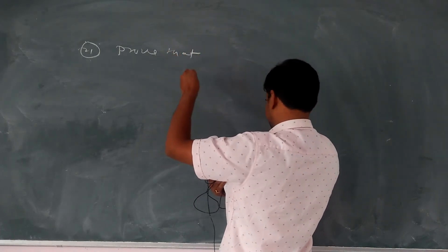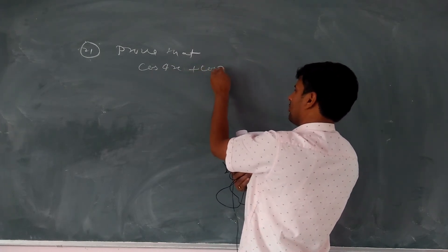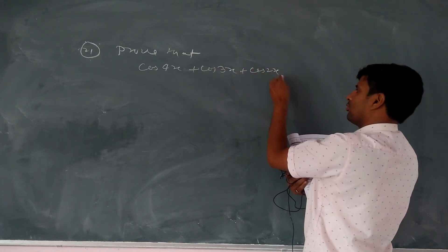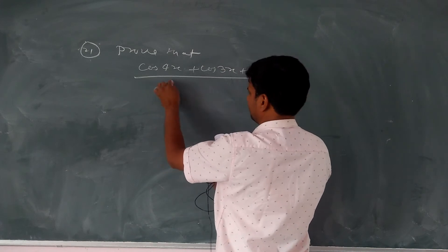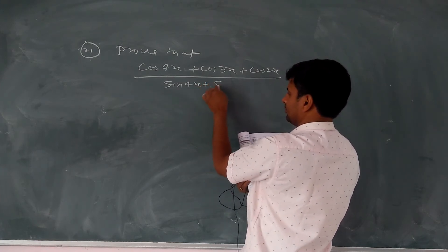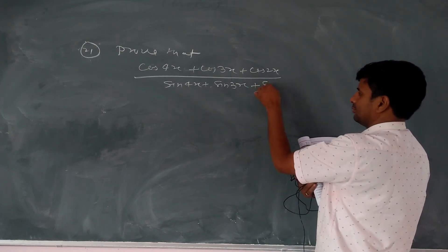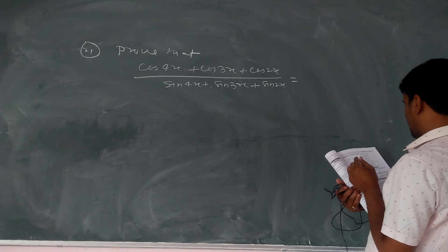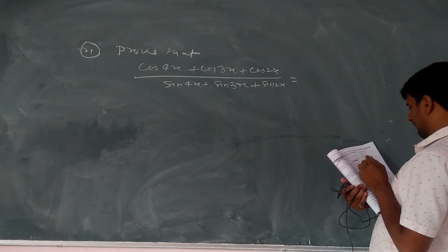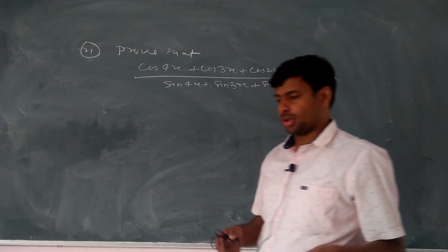Question number 21. So we can do question number 21. Prove that cos 4x plus cos 3x plus cos 2x equals sin 4x minus sin 3x plus sin 2x.